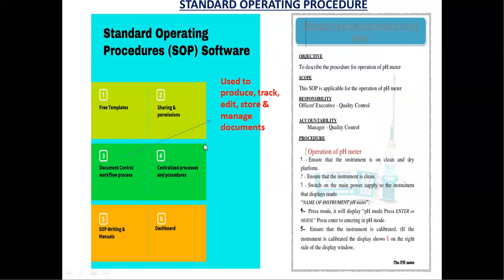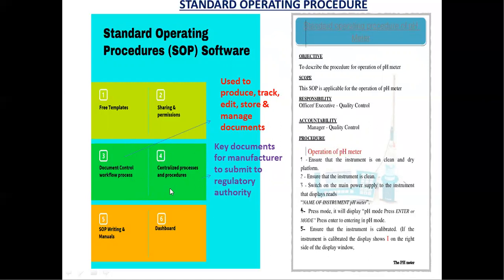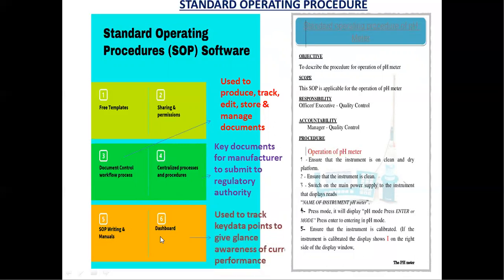The fourth functionality is centralized processes and procedures, where key documents are stored and shown to regulatory authorities for auditing purposes. The fifth is SOP writing and manuals, where many SOPs and manuals are available. The sixth is the dashboard, which is accessible only to authorized persons and is mainly used to track key data points and the current performance of the process.